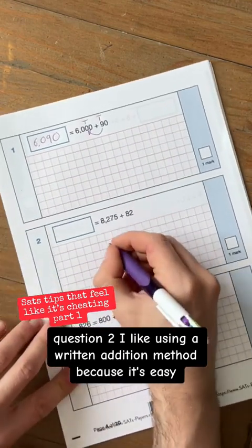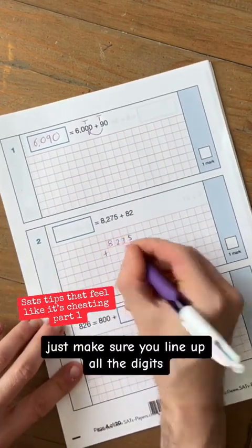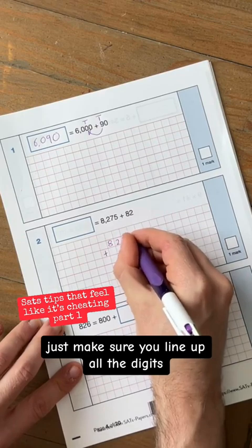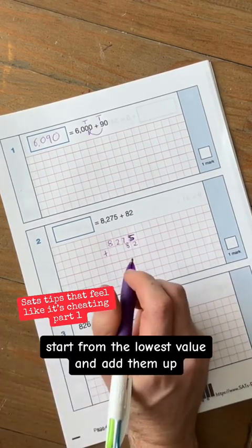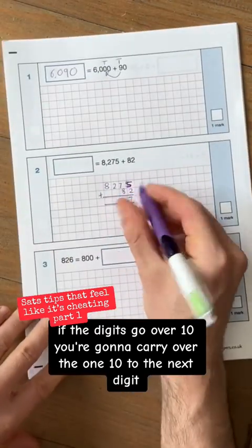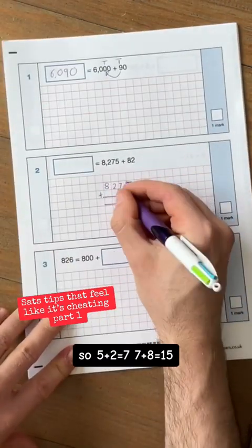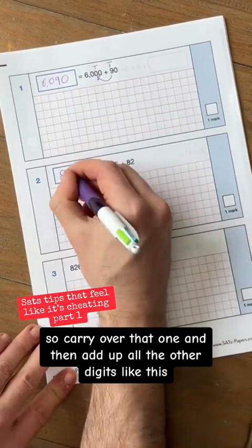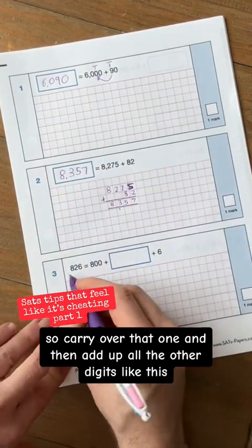Question two, I like using a written addition method because it's easy. Just make sure you line up all the digits, start from the lowest value and add them up. If the digits go over 10, you're going to carry over the 1 ten to the next digit. So 5 plus 2 is 7, 7 plus 8 is 15. So carry over that 1 and then add up all the other digits like this.